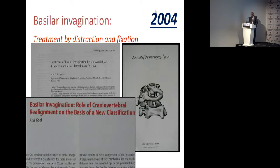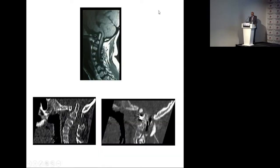In 2004, I introduced a new classification — Group A and Group B. Group A was where I could distract the facet and reduce the dislocation. We divided basilar invagination into two groups: one which was unstable and reducible, and one which was stable and irreducible. For Group A, we described that you can distract and reduce the basilar invagination.